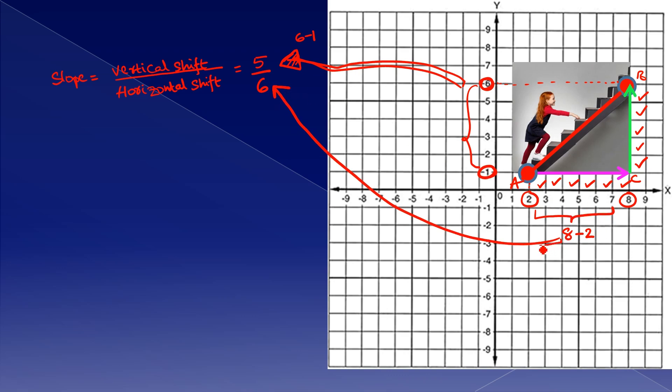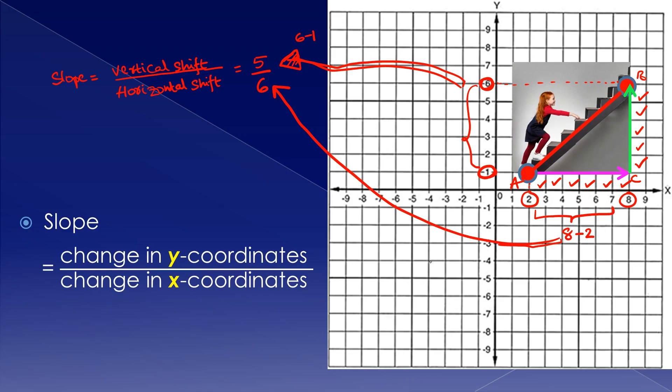So from this we can conclude that the difference of y values and the difference of x coordinates are giving us the slope.